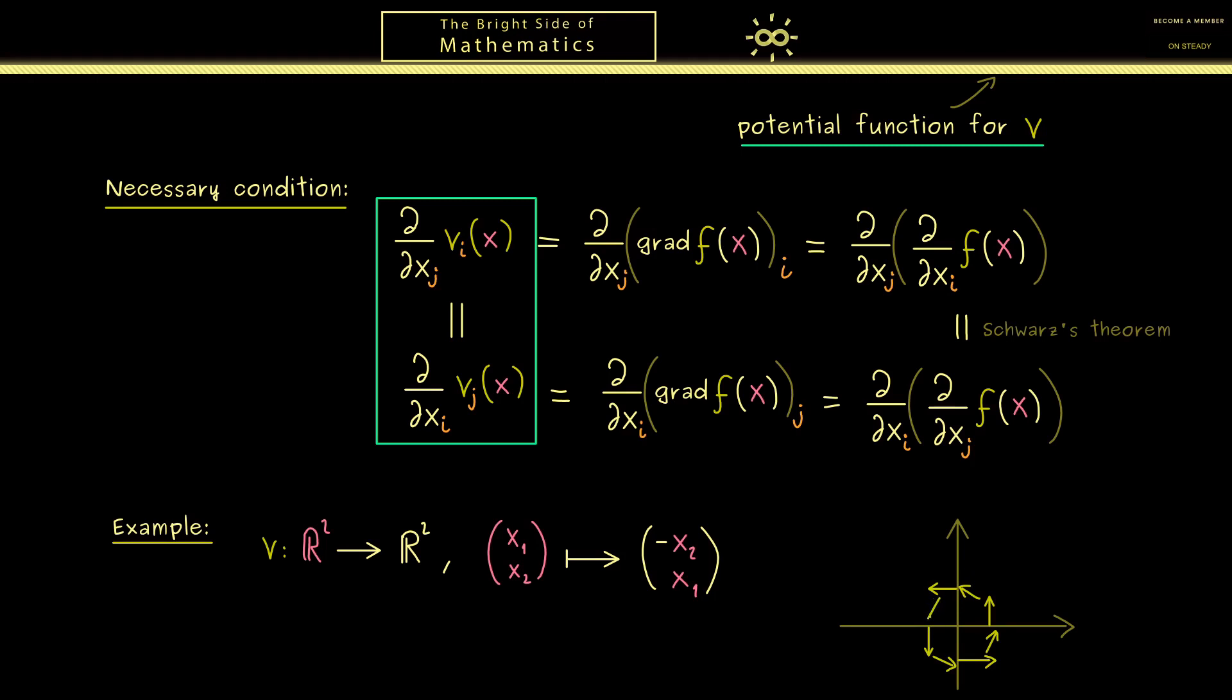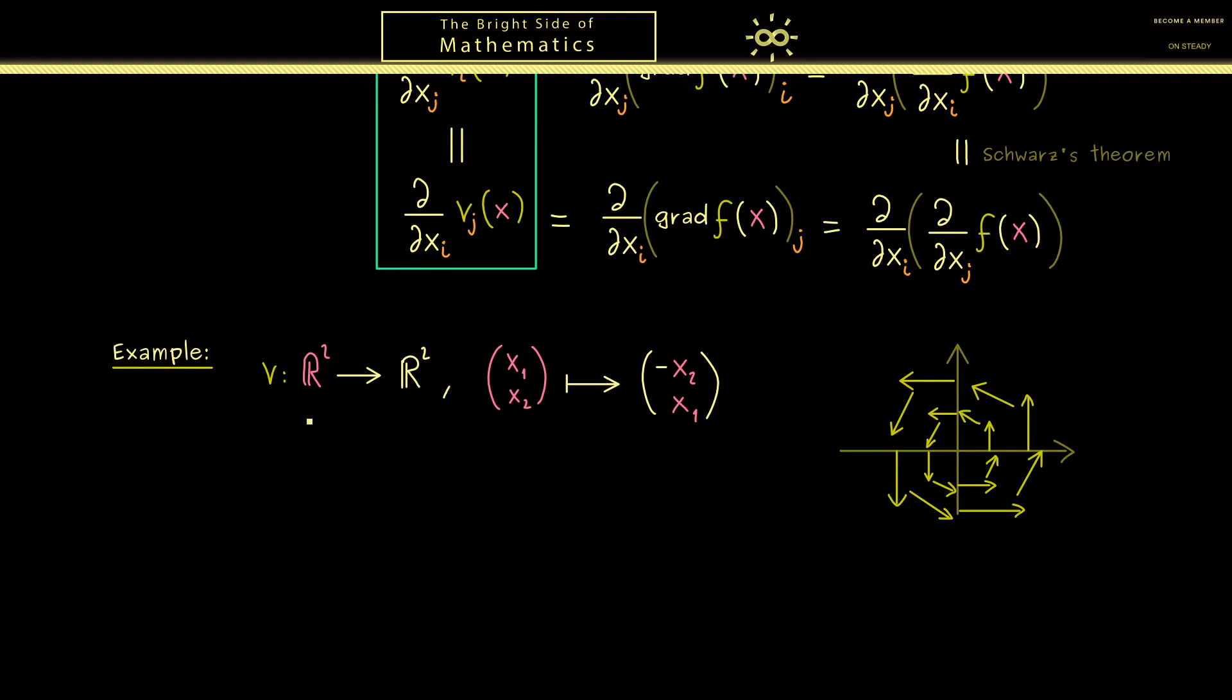So you see roughly what we get is such a vector field that looks like a rotation around the origin. Now the crucial part is that this condition here is not fulfilled for this V. So let's immediately calculate dV_1/dx_2.